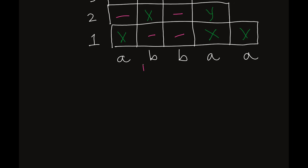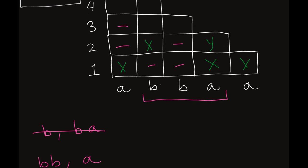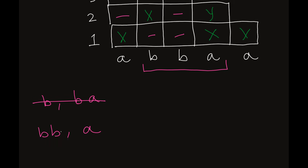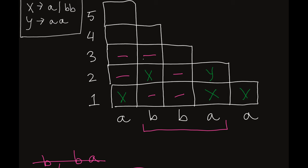Moving on to the next contiguous substring BBA. This can be split as B and BA, or as BB and A. We can rule out the first split right away because we have no single Bs and BA is not in our diagram. For BB and A — BB gives us X, and A also gives us X — so that's X, X. Looking in our grammar for X, X — we don't have that. So we put a dash there.